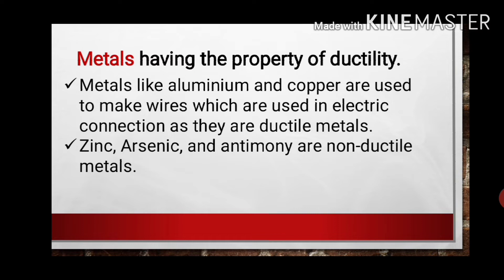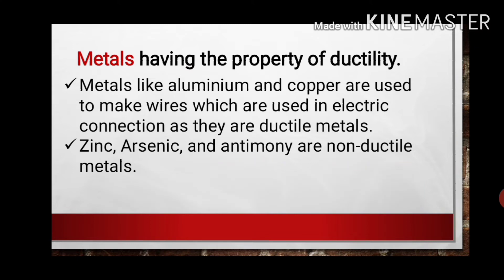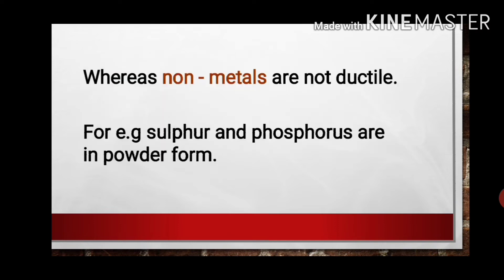In science there are always exceptions. Metals generally have the property of ductility, but not all metals are ductile. For example, zinc, arsenic, and antimony are metals but they are non-ductile — these are exceptions. On the other side, non-metals are not ductile. Sulfur and phosphorus are in powder form, and it is never possible to convert powder into wires. So we confirm that non-metals are non-ductile. This is the second property by which metals and non-metals can be distinguished.